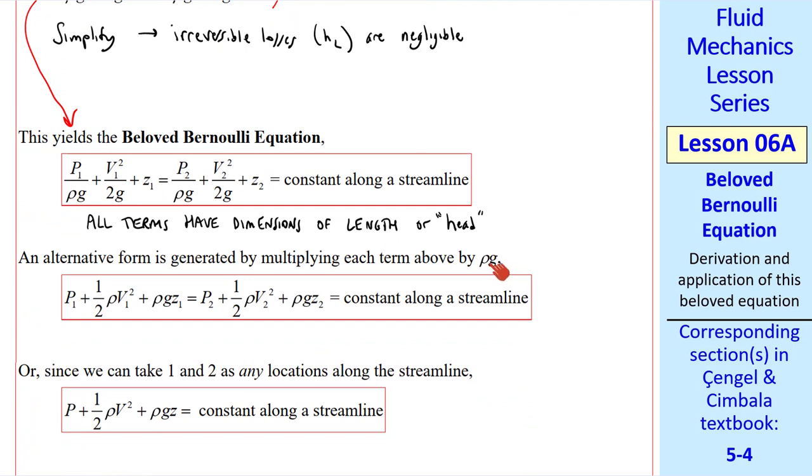Alternatively, we can multiply each term by ρg and get this equation, where all terms have dimensions of pressure. Keep in mind that we're talking about flow through some kind of a duct, perhaps, along a streamline. But 1 and 2 can be any two locations along that streamline.